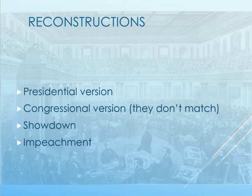The congressional version was a little bit different. Republicans were appalled by the mass killings of ex-slaves and by the Black Codes that were in the South, at least at first. They decided to take control of the Reconstruction idea from Johnson.